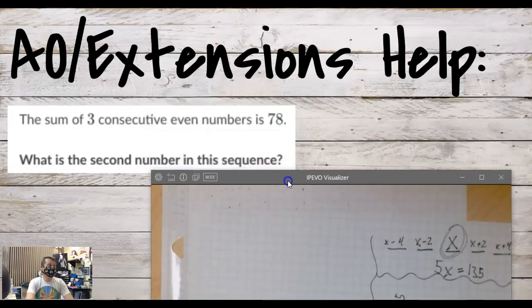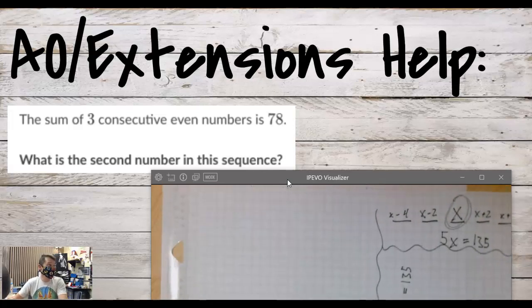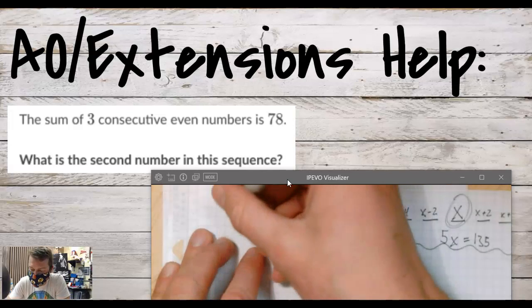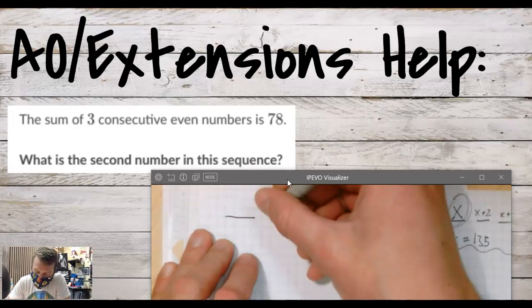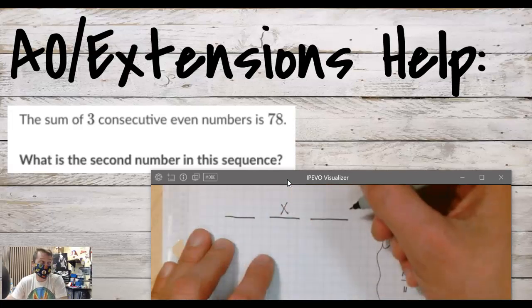All right, we're gonna use one of those shortcut strategies that we talked about at the end of the previous video, because they want us to identify the second number in the sequence. And since it's only three, we're gonna make our life a little bit easier and make the second number our x value.